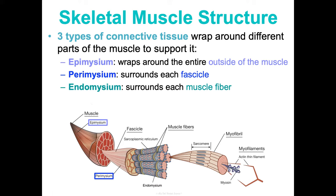Zooming in on the neuromuscular junction and synaptic cleft: action potentials don't move from cell to cell, so they must be converted to neurotransmitters — chemical messengers that diffuse through the synaptic cleft between the somatic motor neuron and the skeletal muscle cell to spread the signal. Acetylcholine (ACh) is the neurotransmitter motor neurons use in muscle contraction, and it travels through the synaptic cleft to cause stimulation.